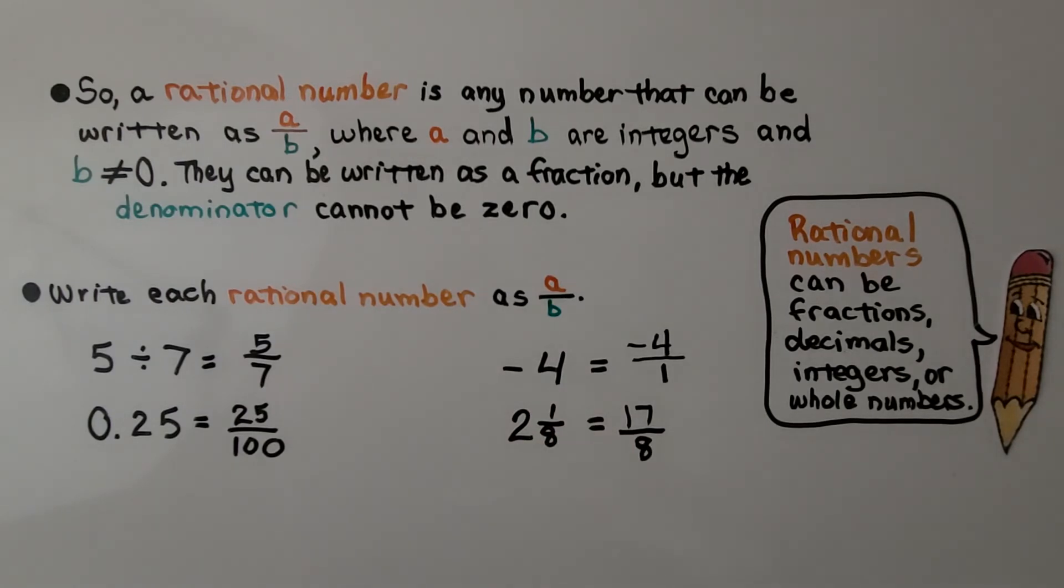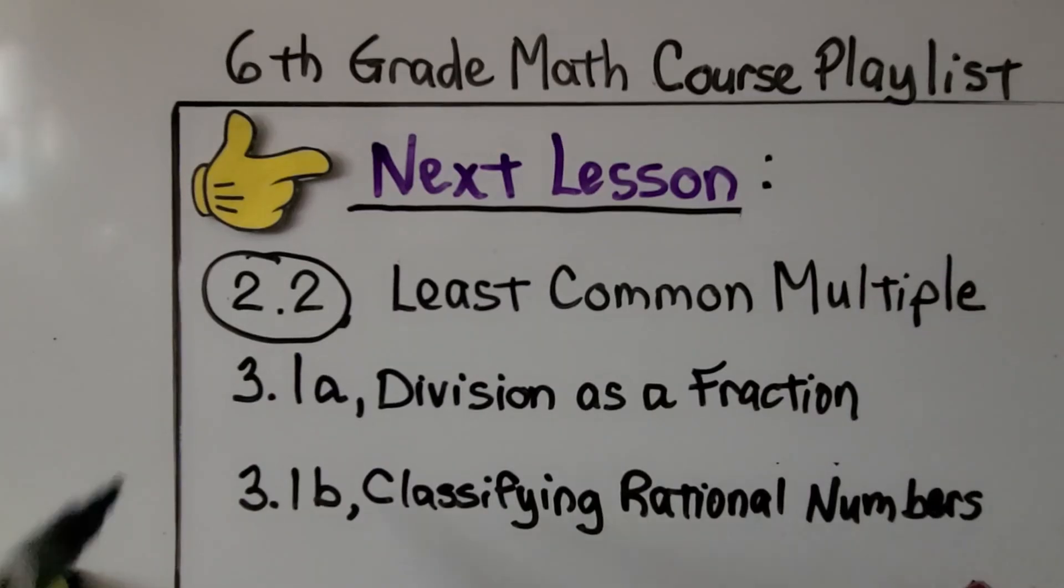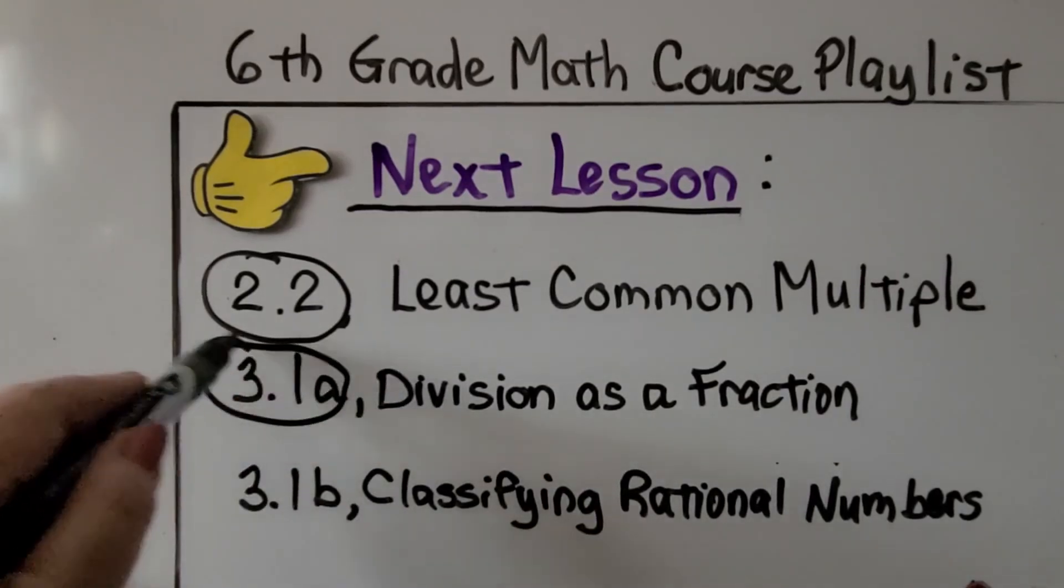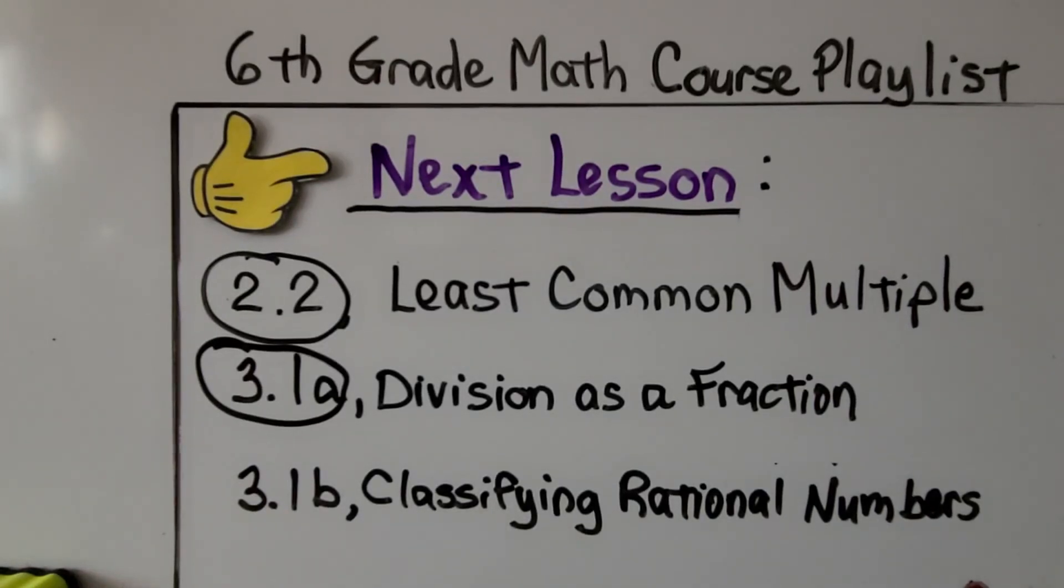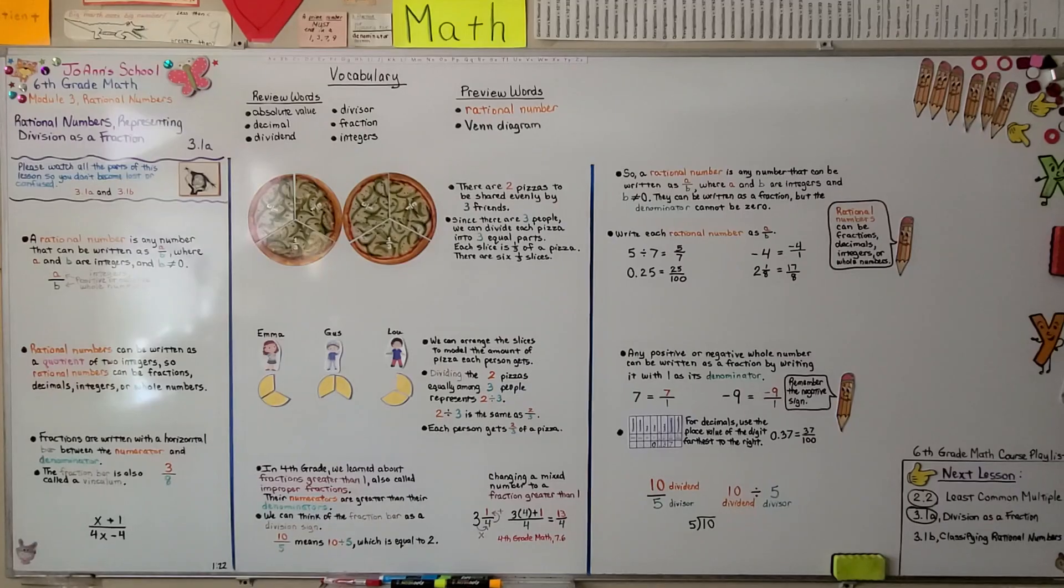So rational numbers can be fractions, decimals, integers or whole numbers. So now we've completed this lesson. We're going to go on to the second part of this lesson, which is classifying rational numbers. We're going to use a Venn diagram. I hope you're doing well. And I hope you have a really nice day. And please hit that like button for me, so I know if you understood. And I'll see you next time. Bye!